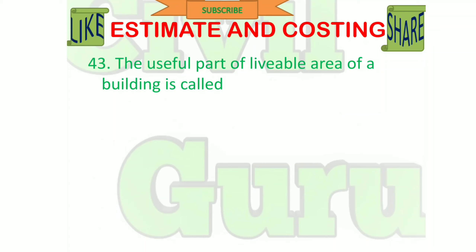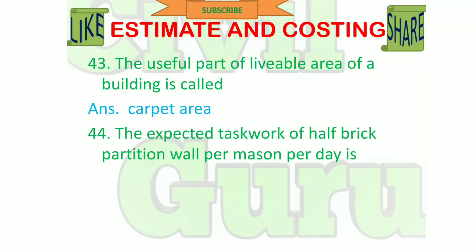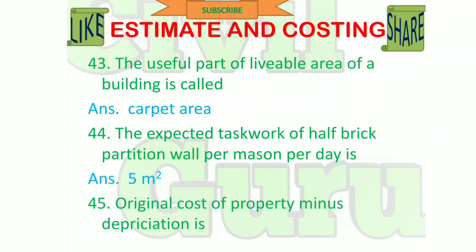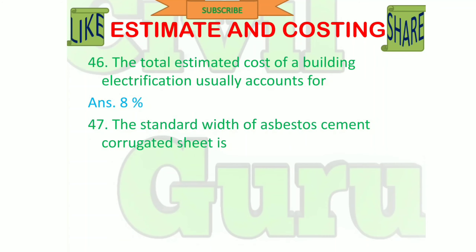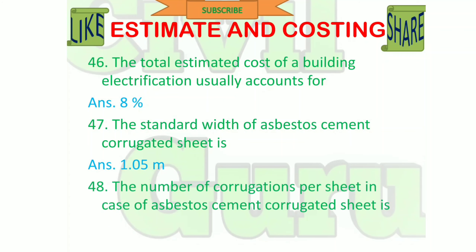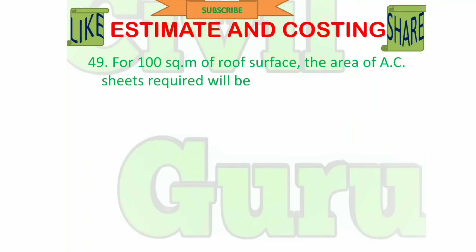The useful livable area of a building is called carpet area. The expected task work of half brick partition wall per mazdoor per day is 5 square meters. Original cost of property minus depreciation is book value. The total estimated cost of building electrification usually accounts for 8%. The standard width of asbestos cement corrugated sheet is 1.05 meters, with 7 corrugations per sheet. For 100 square meters of roof surface, the area of AC sheets required will be 115 square meters.